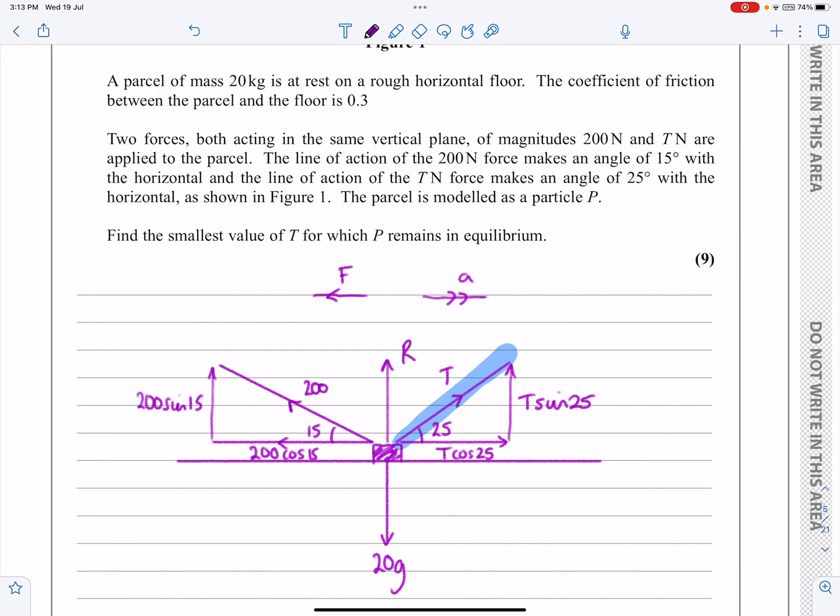What we've got is a situation where T is as small as it can be and still have all the forces in equilibrium. So we've got the exact opposite case where what's happening is the object is close to moving in this direction.